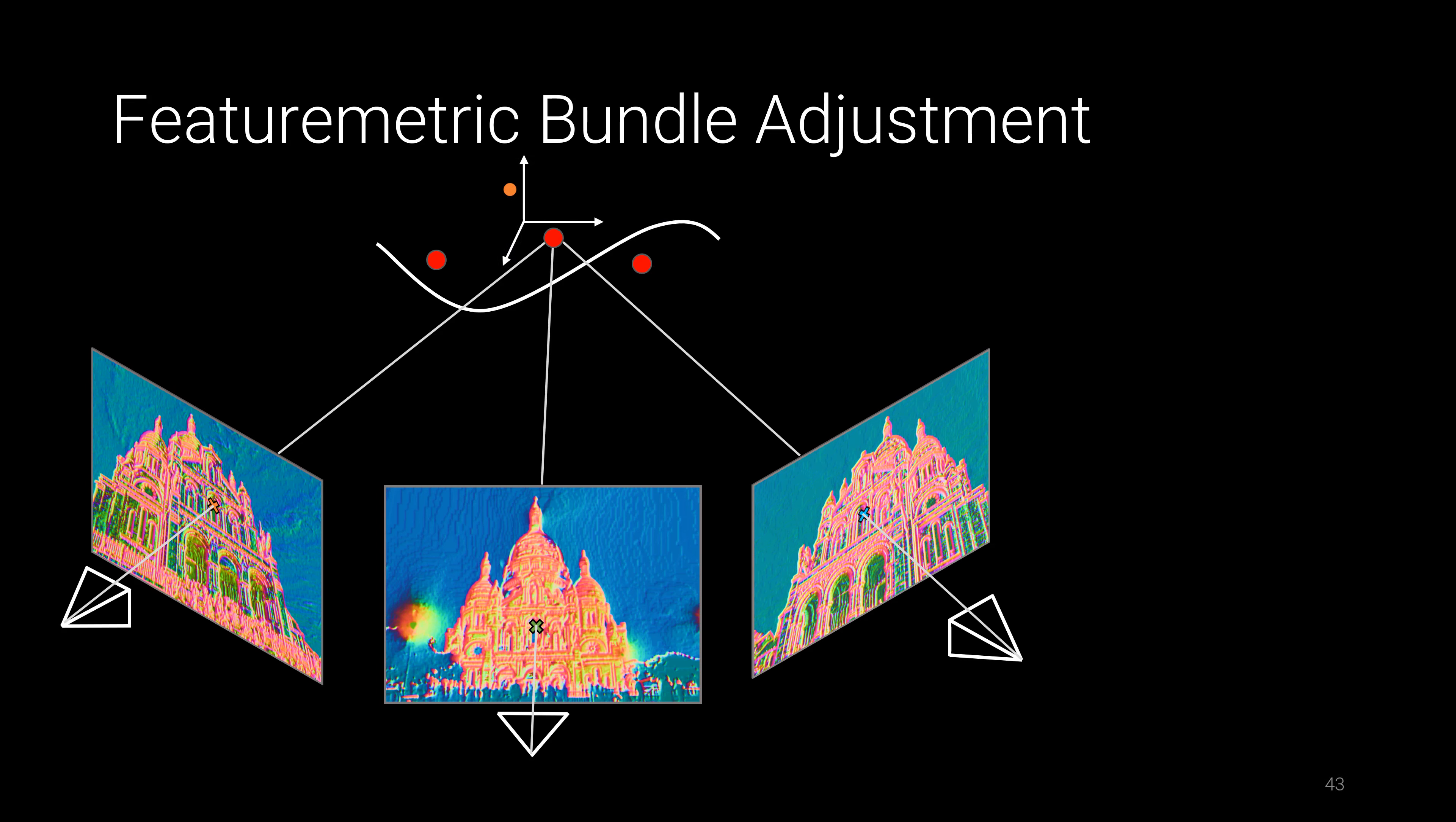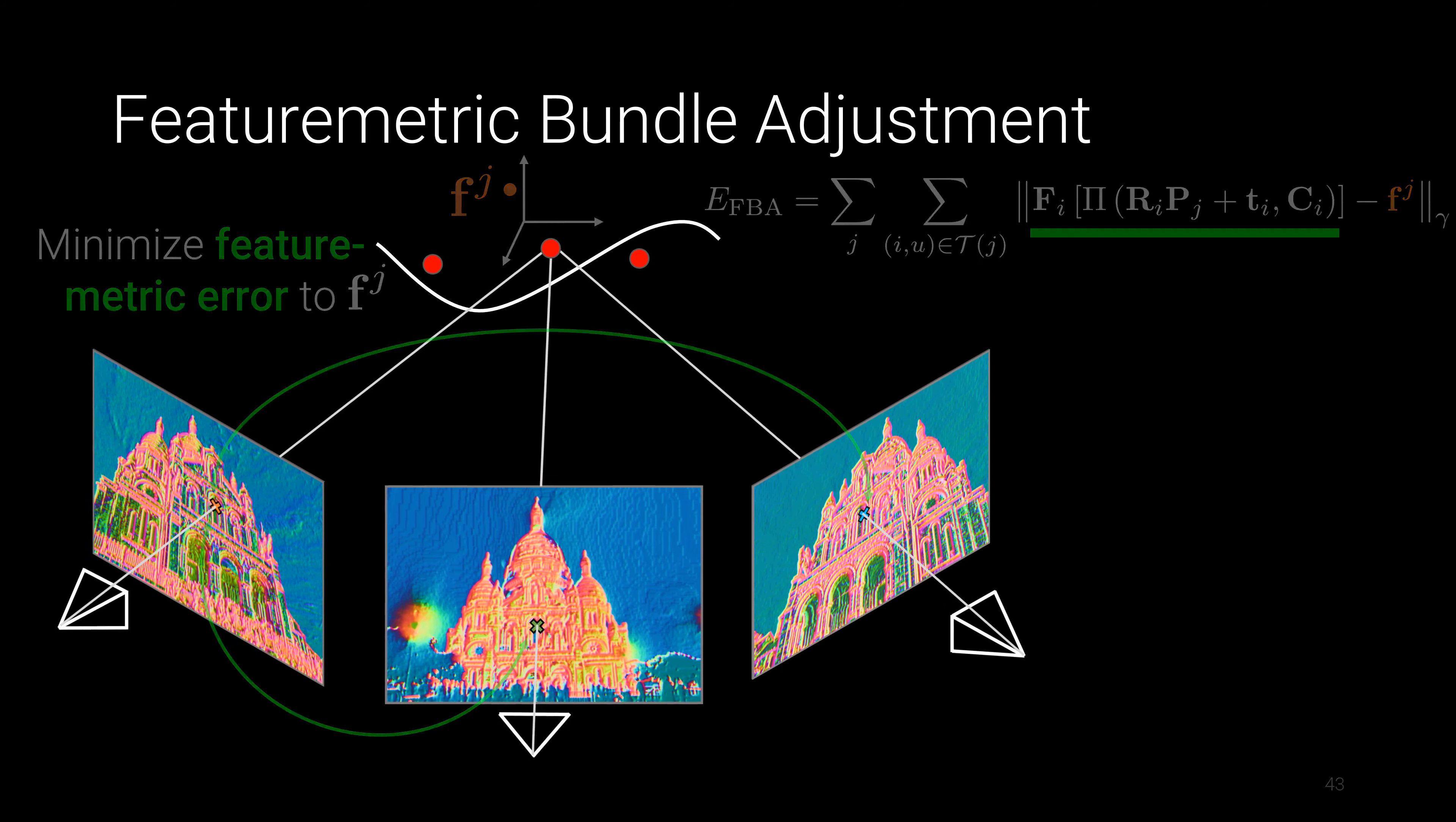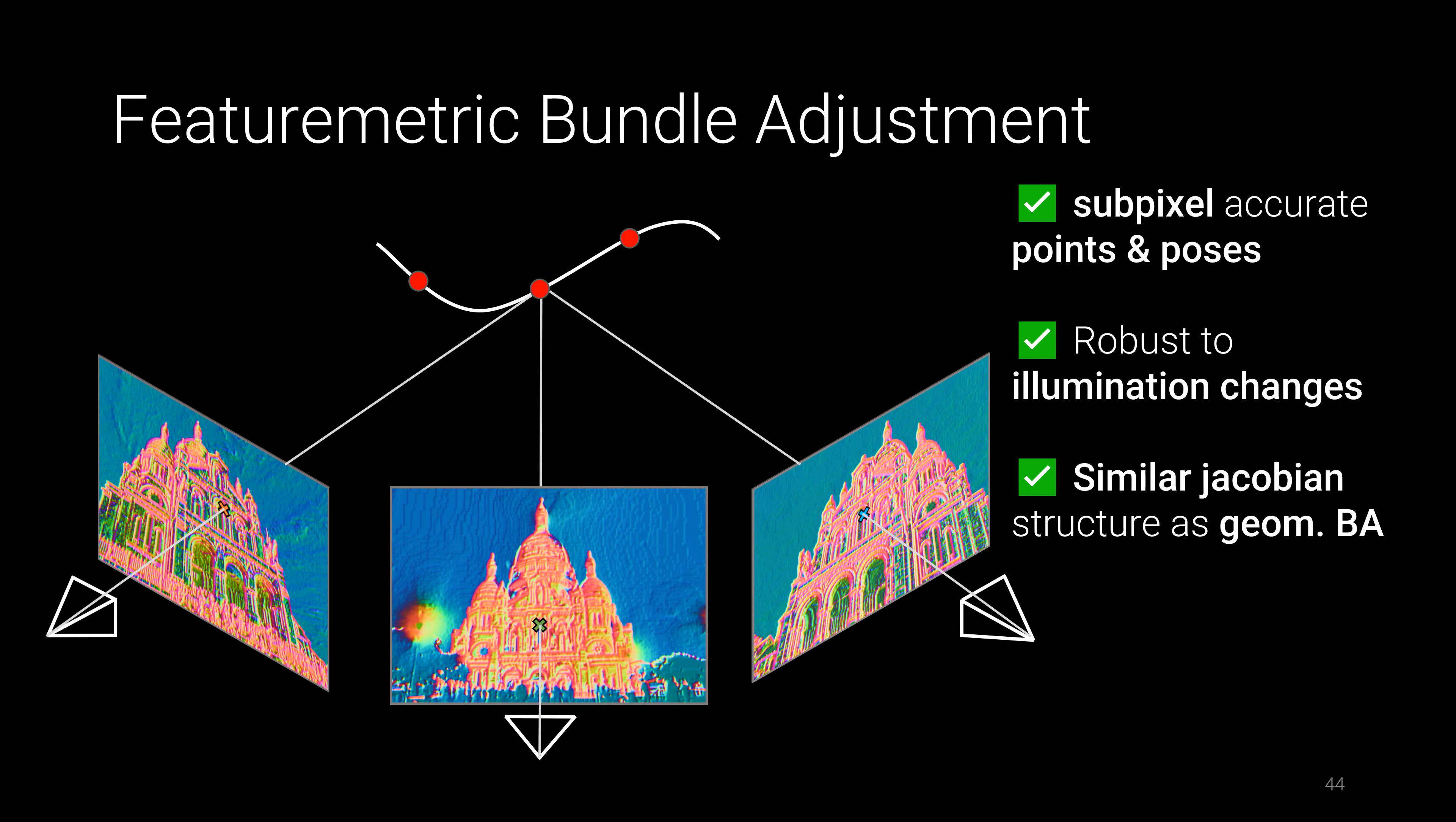The local featuremetric gradient at reprojected locations towards the robust reference allows to globally refine both 3D structure and camera poses. This results in a sub-pixel accurate 3D model, while the pipeline remains robust to real-world challenges such as illumination changes. Note that the Jacobian sparseness pattern is similar to geometric SFM and thus efficient schemes like the Schur complement trick apply.